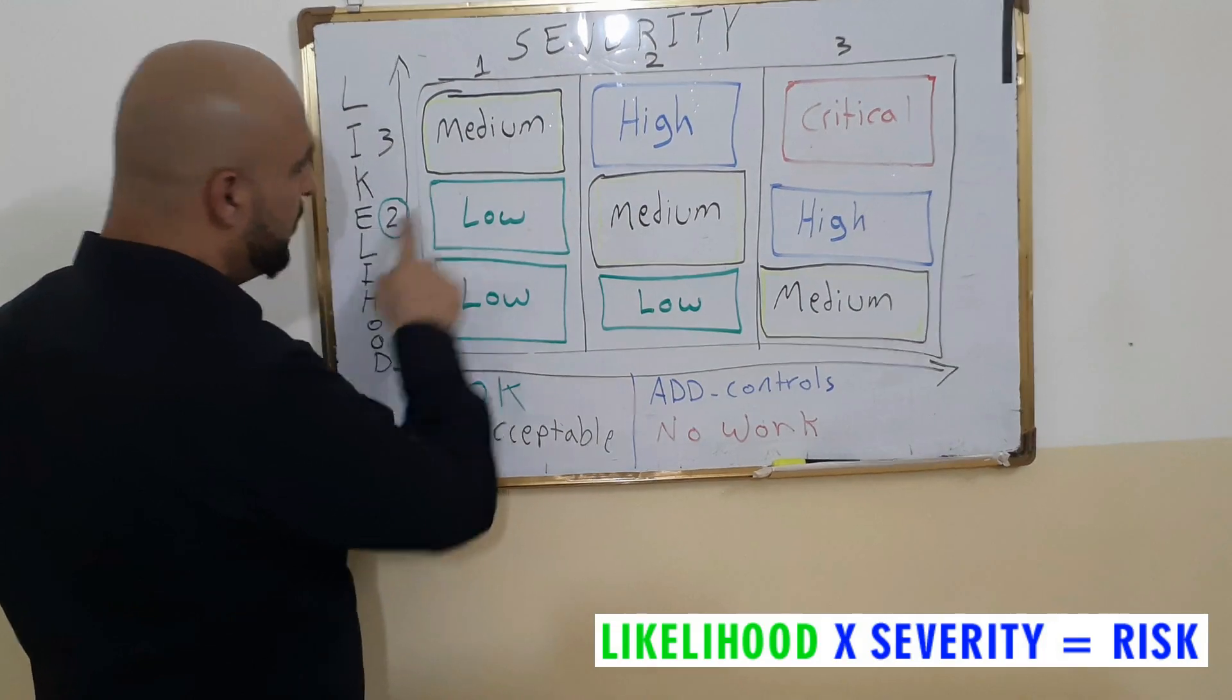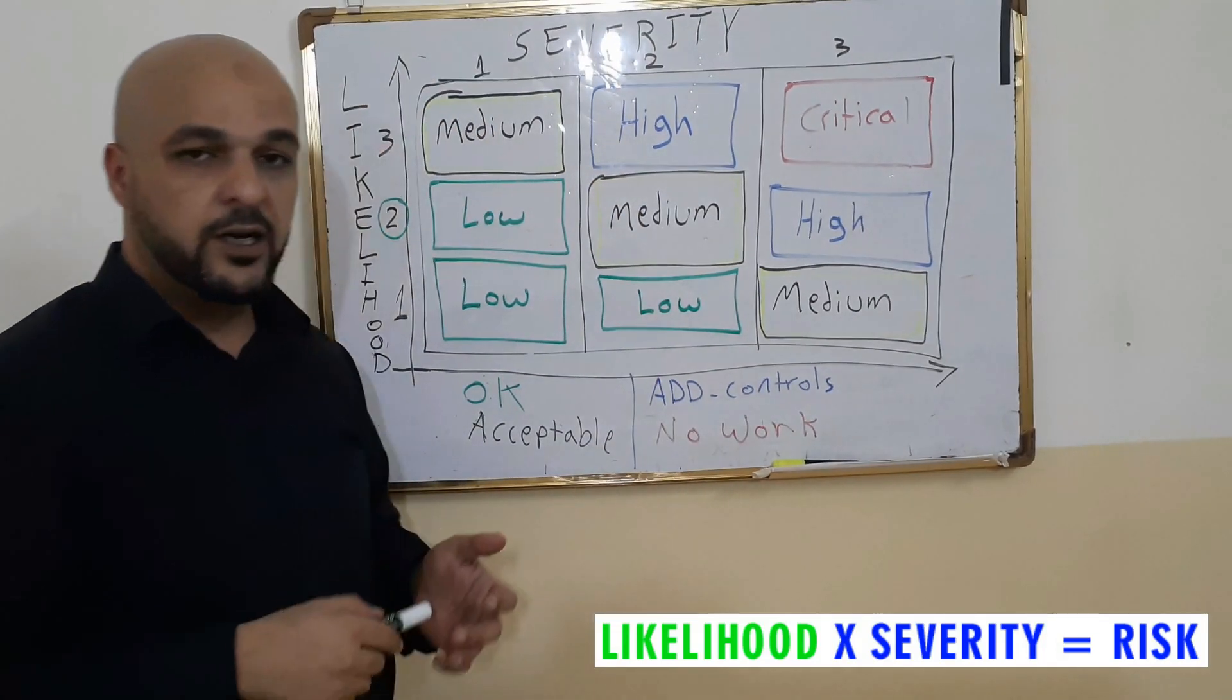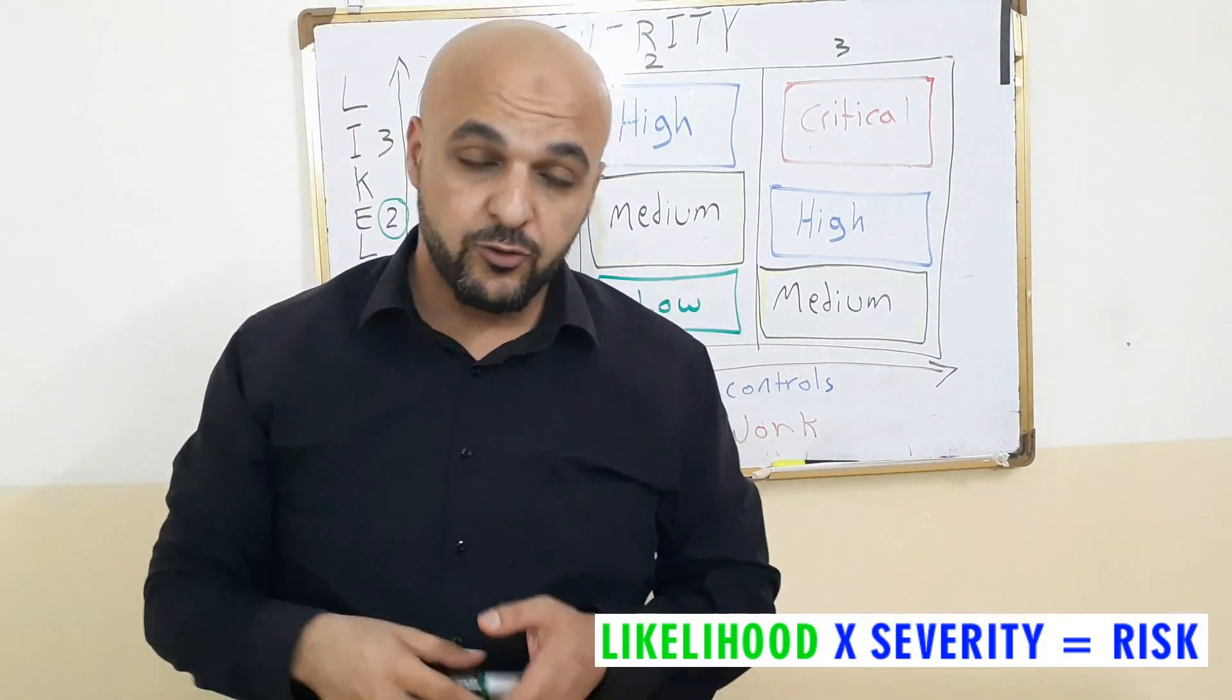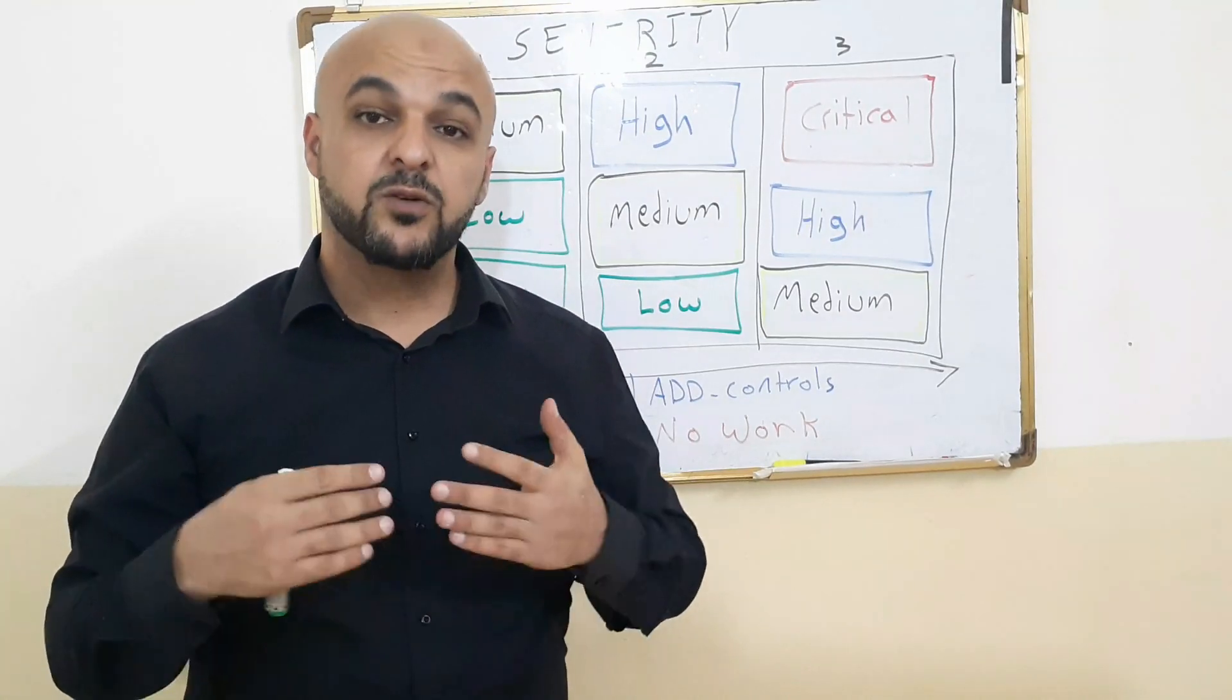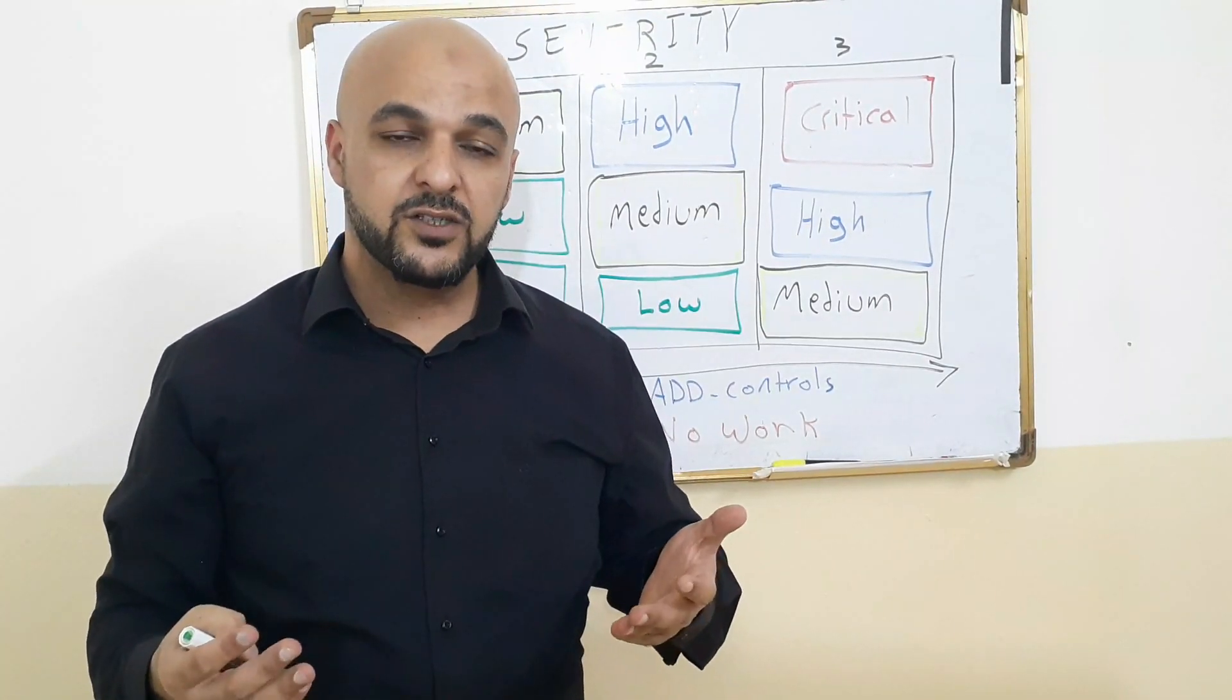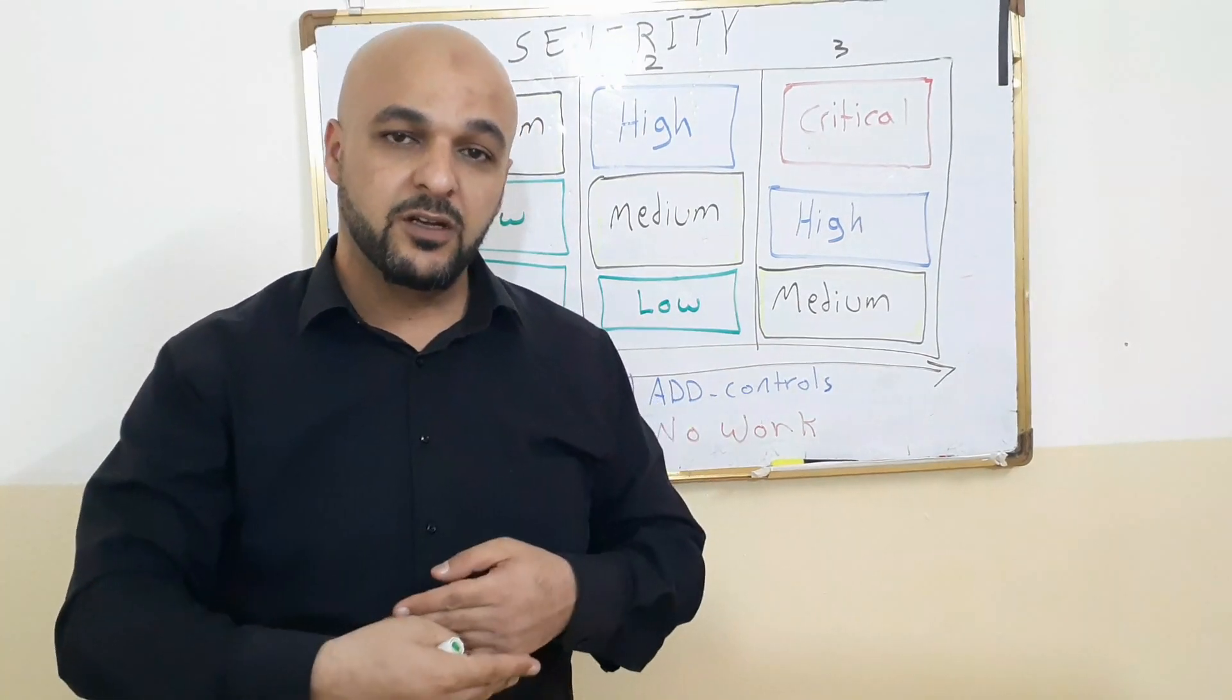Four. So four tells us additional controls are required. Additional controls are required before we start the work. What are the additional controls? First, we try to eliminate the hazard. What is it? The scaffold is not good. What do we do to bring in some new ones?